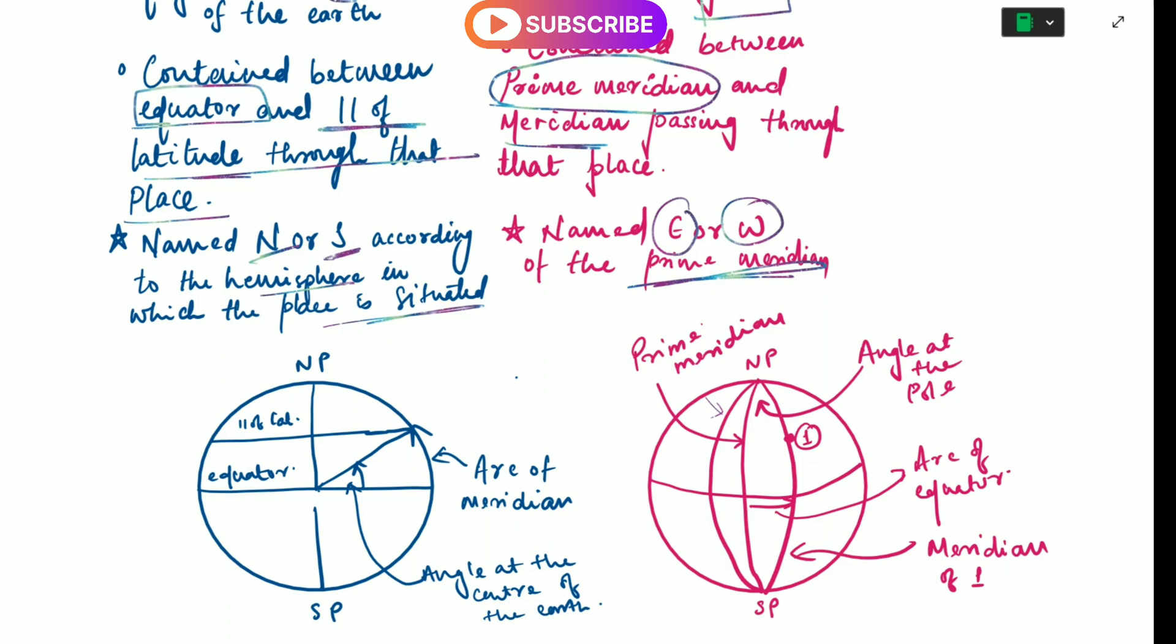What we have discussed earlier can be understood by seeing this picture: latitude is the angle at the center of the earth, the arc of the meridian contained between parallel of latitude and equator, whereas longitude is the angle at the poles or the arc of the equator contained between the meridian passing through that place and the prime meridian.